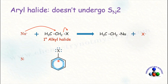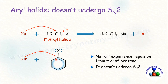But in the case of aryl halide, when a nucleophile tries to approach the alpha carbon of aryl halide, it experiences repulsion from the pi electron cloud of the benzene ring. That's why aryl halide doesn't undergo nucleophilic substitution by SN2 reaction.